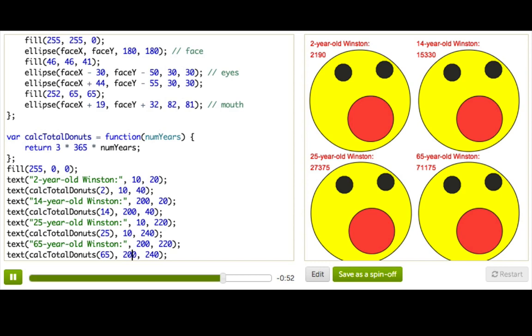Okay, wow. So if he makes it to 65, he will eat 70,000 donuts. That is a lot of donuts. I don't think Winston's going to make it.